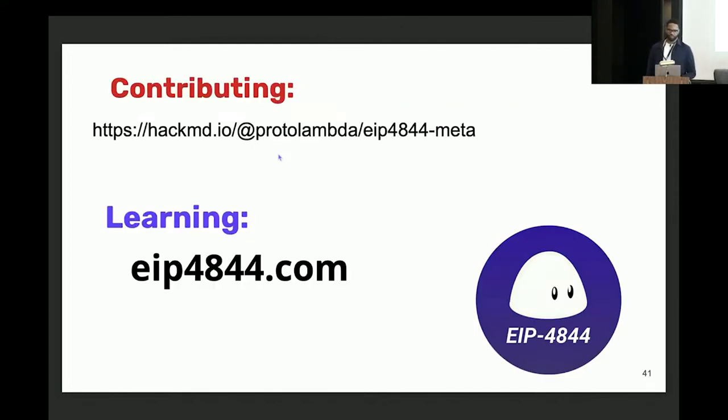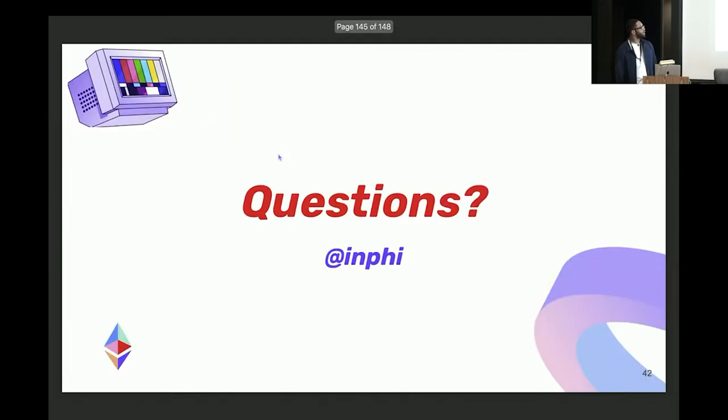For EIP-4844, the best resource really to learn more about it is the website, EIP4844.com. There's also a HackMD written by ProtoLambda that summarizes all the different spec changes we've made over the years. Because right now, it's kind of hard to follow EIP-4844 development because we have the execution layer specs, we have the consensus layer specs, and those are not always in sync. So this meta link in HackMD should really help you figure out where the current status of the specification is. And yeah, that's it. Any questions?